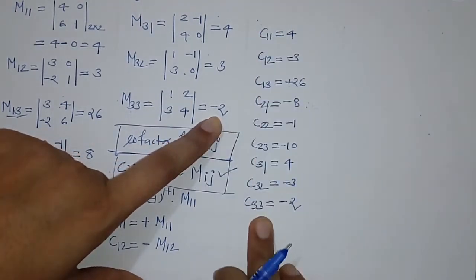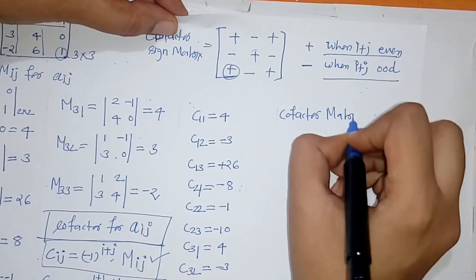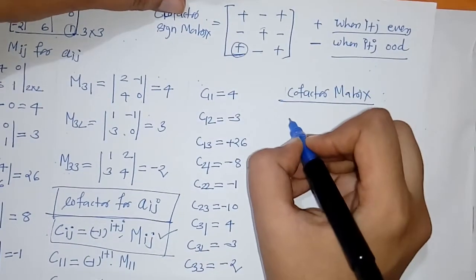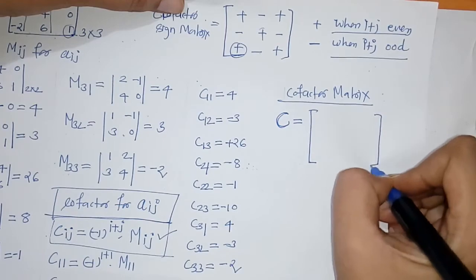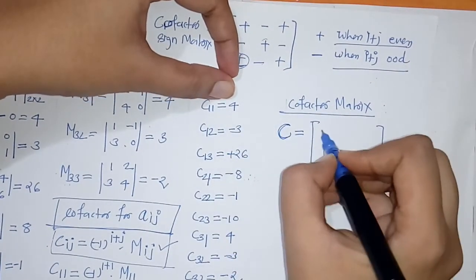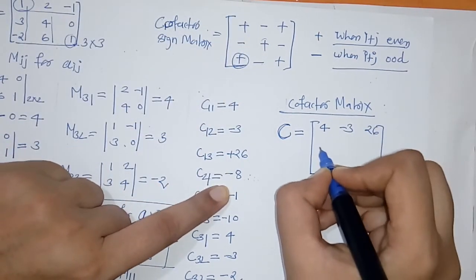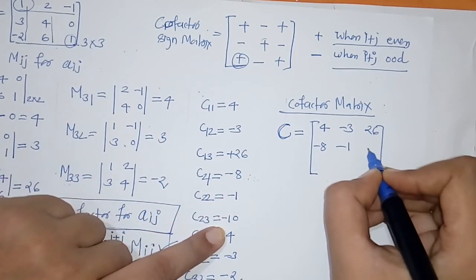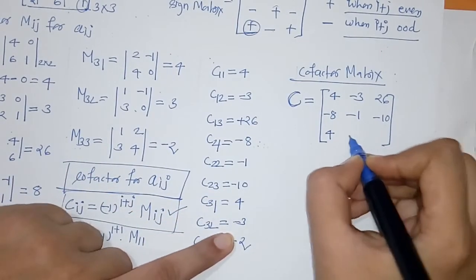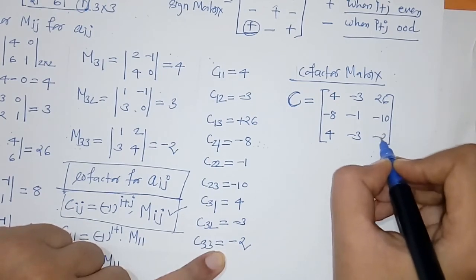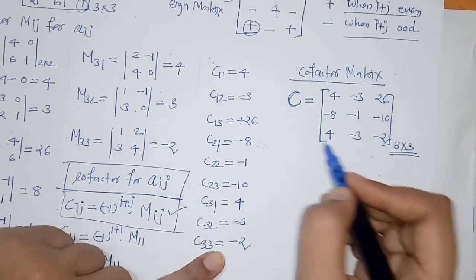Now we write down the cofactor matrix C by collecting all these cofactors. We place C_11, C_12, C_13 in the first row; C_21, C_22, C_23 in the second row; and C_31, C_32, C_33 in the third row — with C_33 equal to minus 2. This gives us the cofactor matrix of order 3×3.